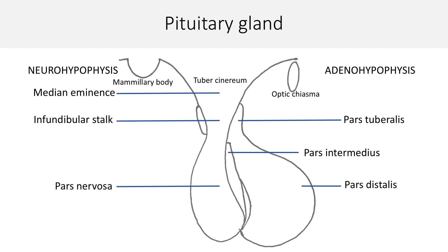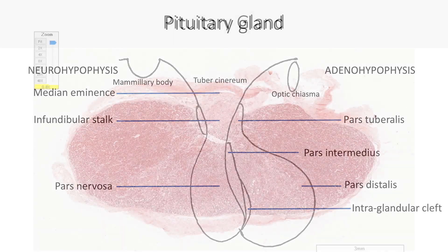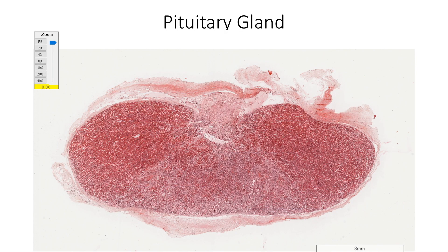Between the pars distalis and pars intermedius, the remnant of the cavity of Rathke's pouch can be seen as the hypophysial cleft or intraglandular cleft. Pituitary gland is covered by a capsule which blends with the surrounding meninges.